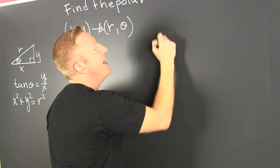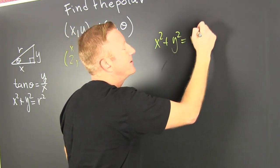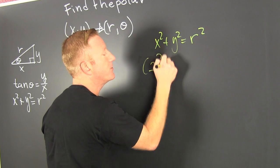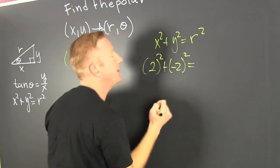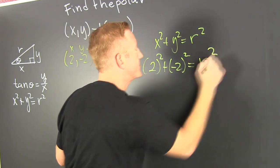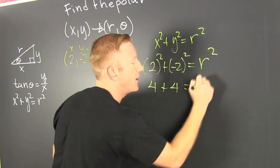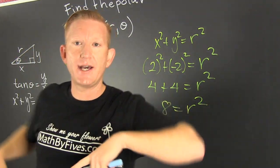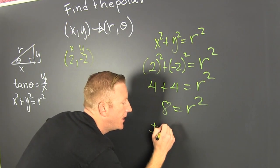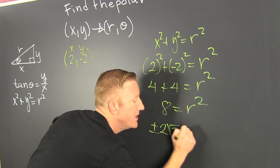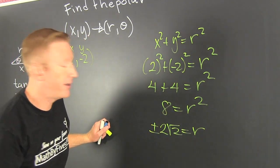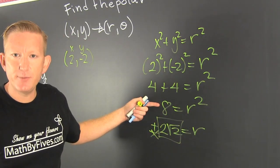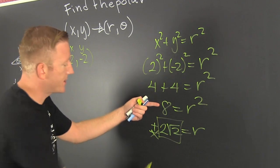X squared plus Y squared equals R squared. So, my X is a deuce squared plus a minus deuce squared — wait for it — R squared. So 4 plus 4 is R squared, meaning 8 is R squared. I'm going to take the square root of both sides, giving plus or minus 2 root 2 equals R. I'm going to assume R is positive. When we reduce 8, we see 8 is 2 times 4, and the square root of 4 is 2 — that's how that 2 got out there.